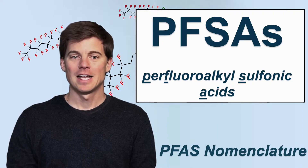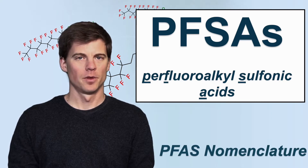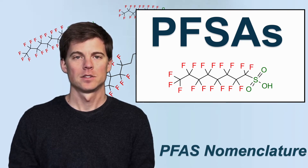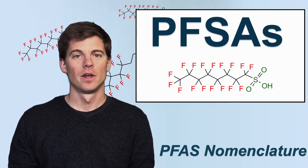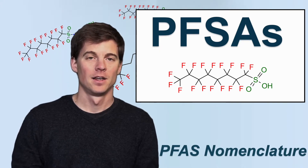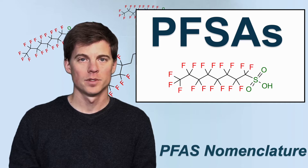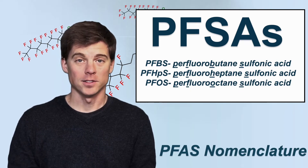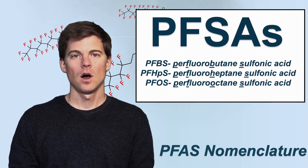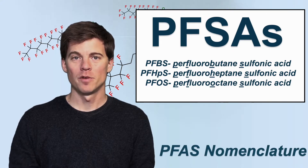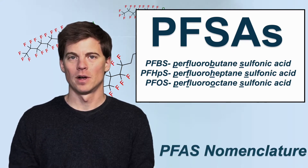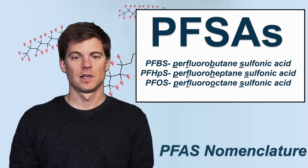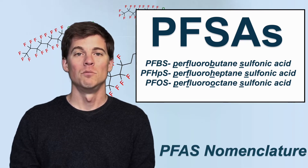The second class is PFSAs — perfluoroalkylsulfonic acids. Very similar to PFCAs, except instead of a CO2 group on the end, we have an SO3 group — also an acidic functional group. The 8-carbon example has eight fluorocarbons, compared to PFOA which had seven fluorocarbons and one CO2, making it slightly longer. That compound is PFOS — P-F-O-S — perfluorooctane sulfonic acid. PFOS and PFOA are the original 'dynamic duo,' known for a long time including their health effects, and were phased out by 3M in 2000. Other chain lengths exist: PFHPS would be heptanesulfonic acid, PFBS would be butanesulfonic acid.